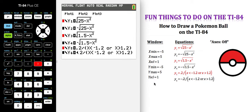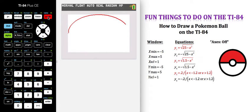Now everything should be set, the window was set, the equations are in and the axes are turned off. So now we can go to the graph.